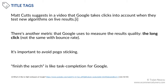Although it has not been officially confirmed, MadCats suggests in a video that Google takes clicks into account when they test new algorithms on live results. Remember, there is a metric that Google uses internally to measure the quality of their results: the long click. This occurred when someone went to a search result — ideally the top one — and did not return. This means Google has successfully fulfilled the query. The ideal scenario is to finish the search on your website; that is the ultimate quality signal you can send to search engines.